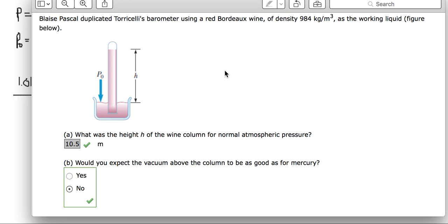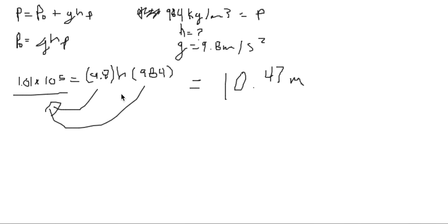The second part asks: would you expect the vacuum above the column to be as good for mercury? We can figure that out knowing mercury's density is about 13.6 g/cm³.